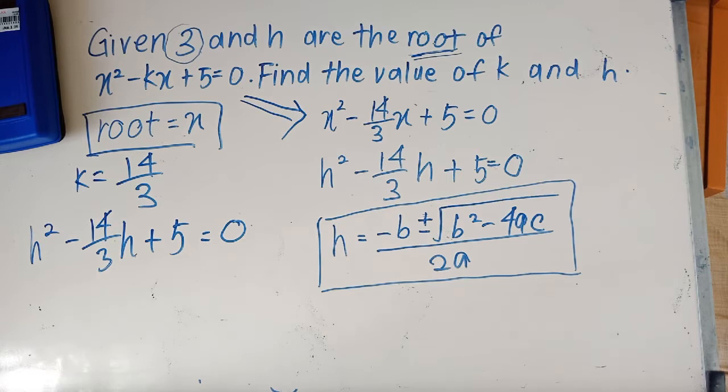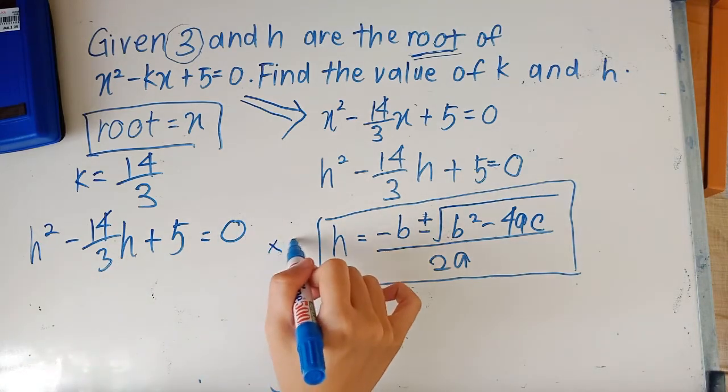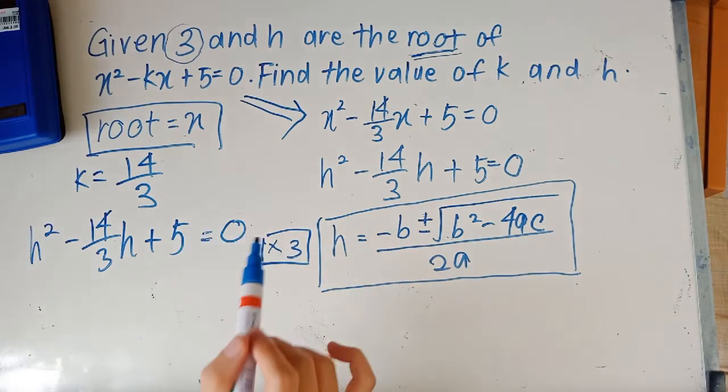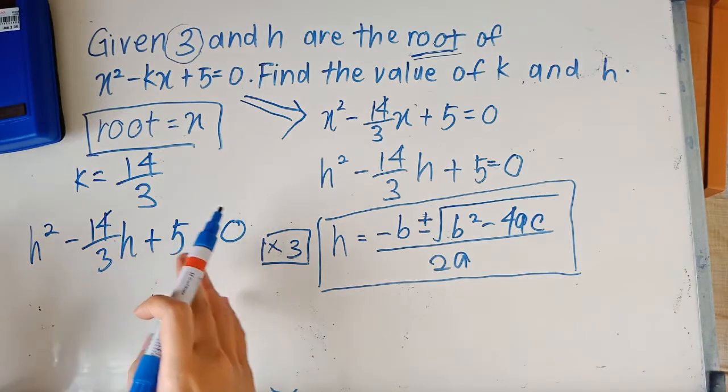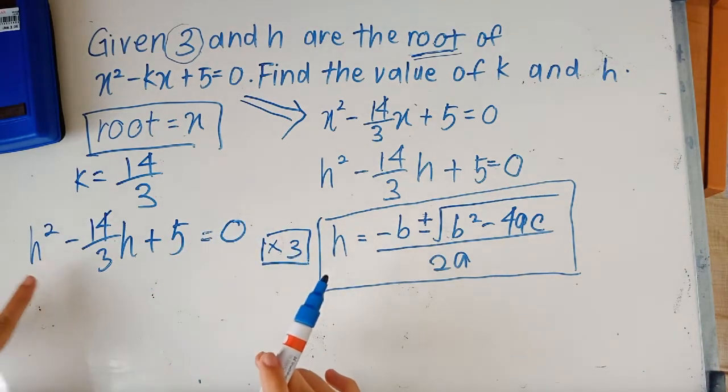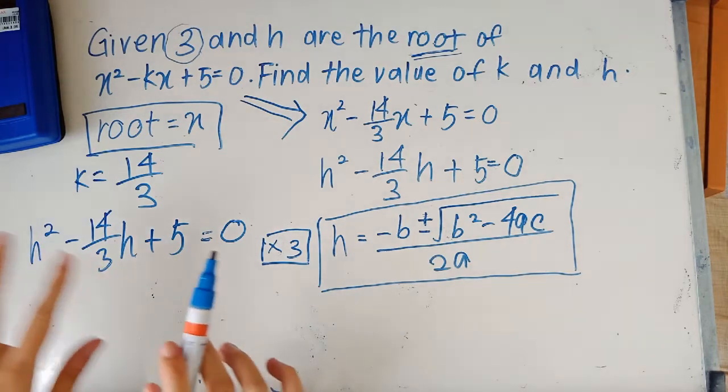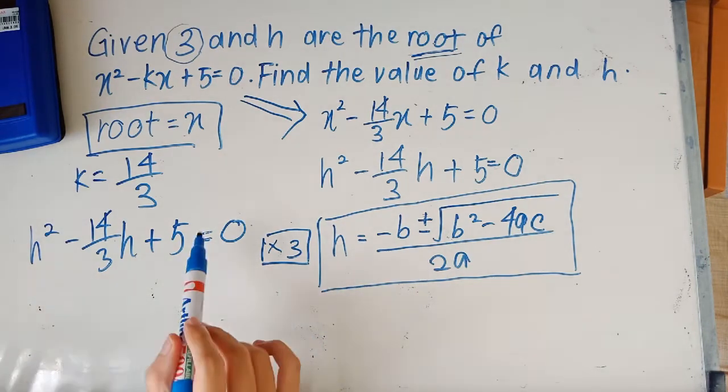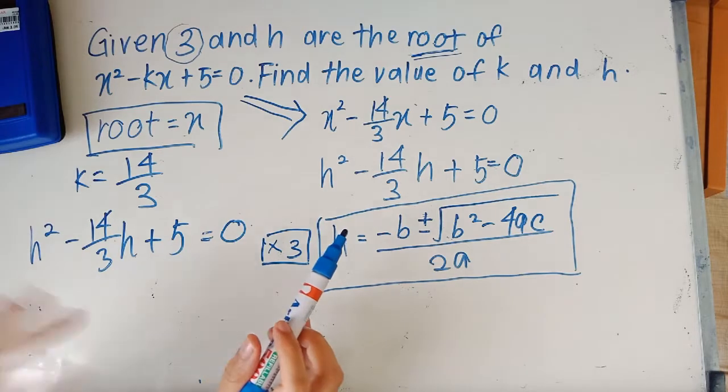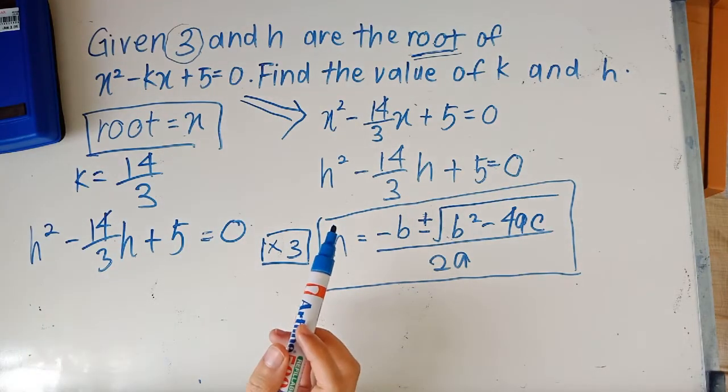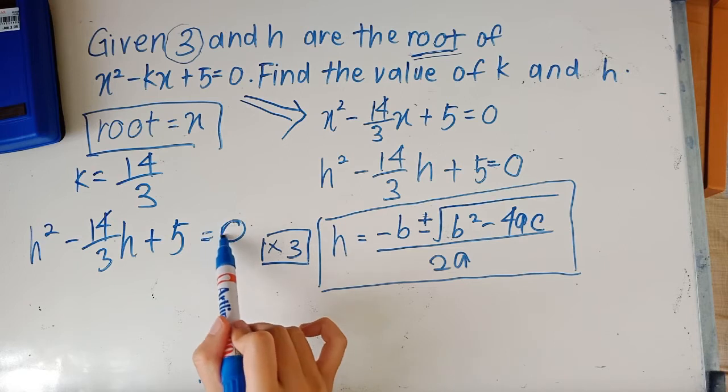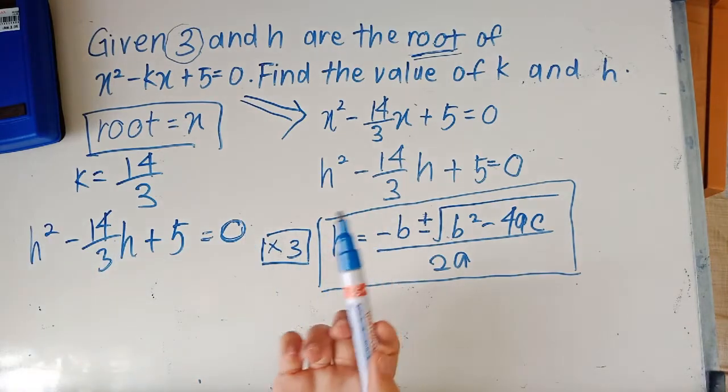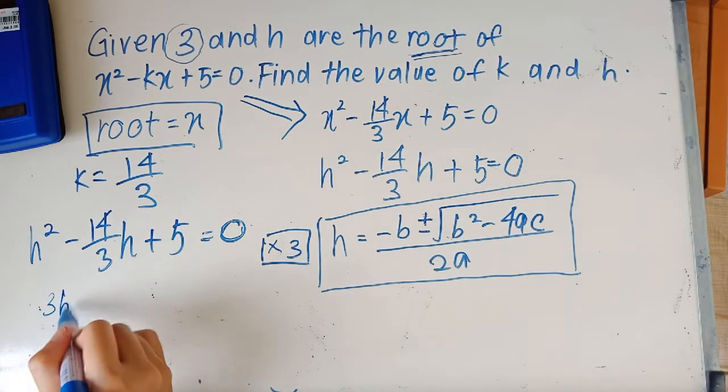And what we can do to actually make this equation a little bit simpler is by multiplying the entire thing by 3. So you can multiply this by 3, and you can only do this if there is an equal zero. Remember this: if it is just an expression, let's say it's just h² - 14/3 h + 5, it is an expression, you can't simply multiply everything by 3. But if it is an equation, meaning there's an equal sign here, you can just multiply everything by 3. You have a 0 here, when you multiply 3 by 0 you'll still end up with 0, and the rest of it you just have to multiply by 3 to get 3h² - 14h + 5 = 0.